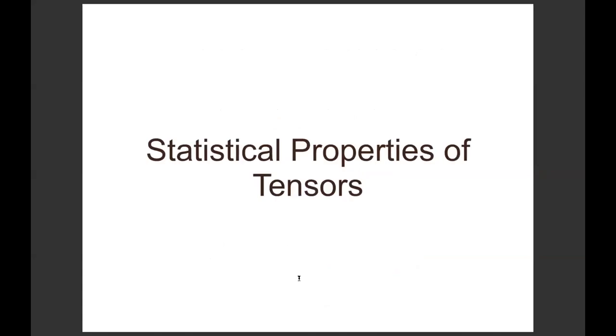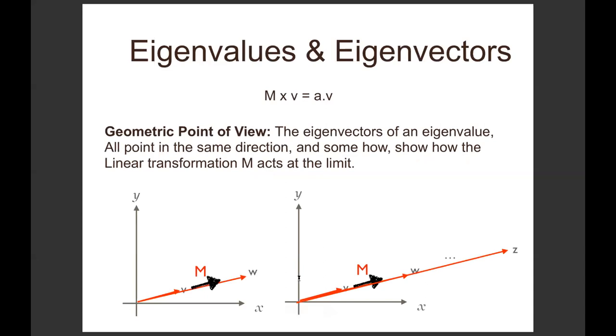Now we ask, what are the behavioral properties and statistical properties of this tensor? Where are they on the plane? What do they do? We have these tensors, they lie somewhere, they do something. What can we say about them? We want to study them statistically, and that's where this work comes in. The origins go back to eigenvalues and eigenvectors.